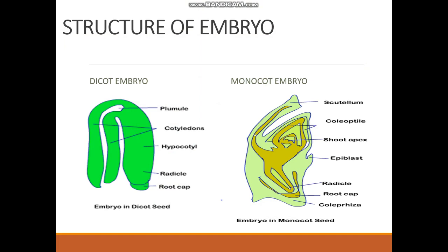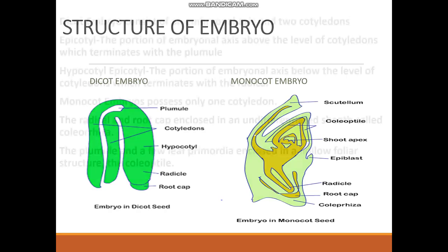The parts of an embryo are an embryonal axis and cotyledons. A dicot embryo has two cotyledons whereas a monocot embryo has only one cotyledon. The region of the embryonal axis above the level of cotyledons up to the plumule is called epicotyl, and the region below the level of cotyledons down to the radicle is the hypocotyl. In monocot embryo, the plumule is protected by the coleoptile and the radicle is protected by the coleorhiza.